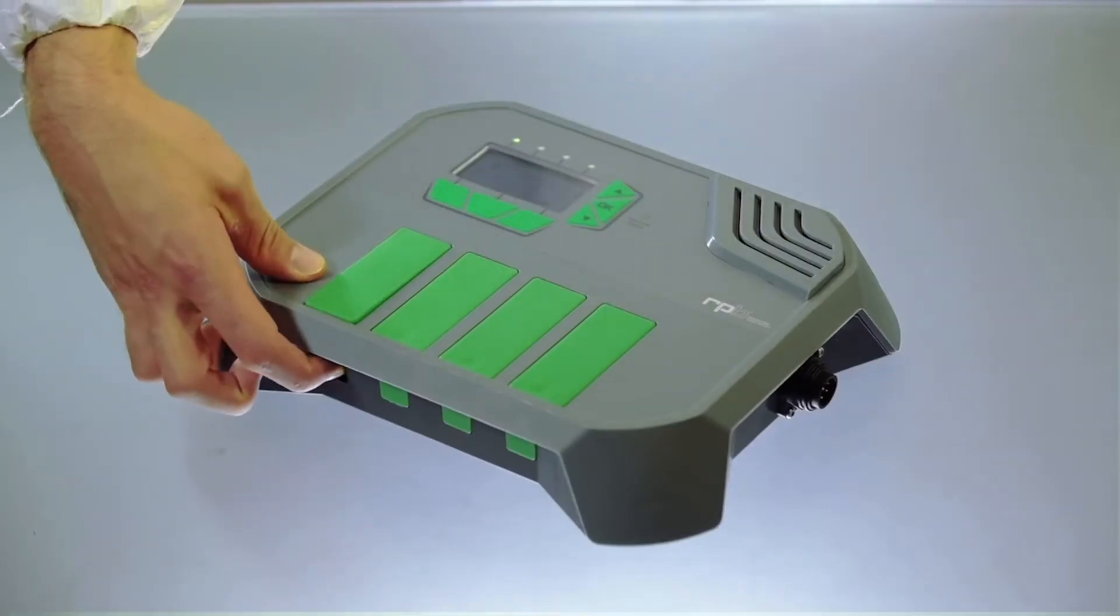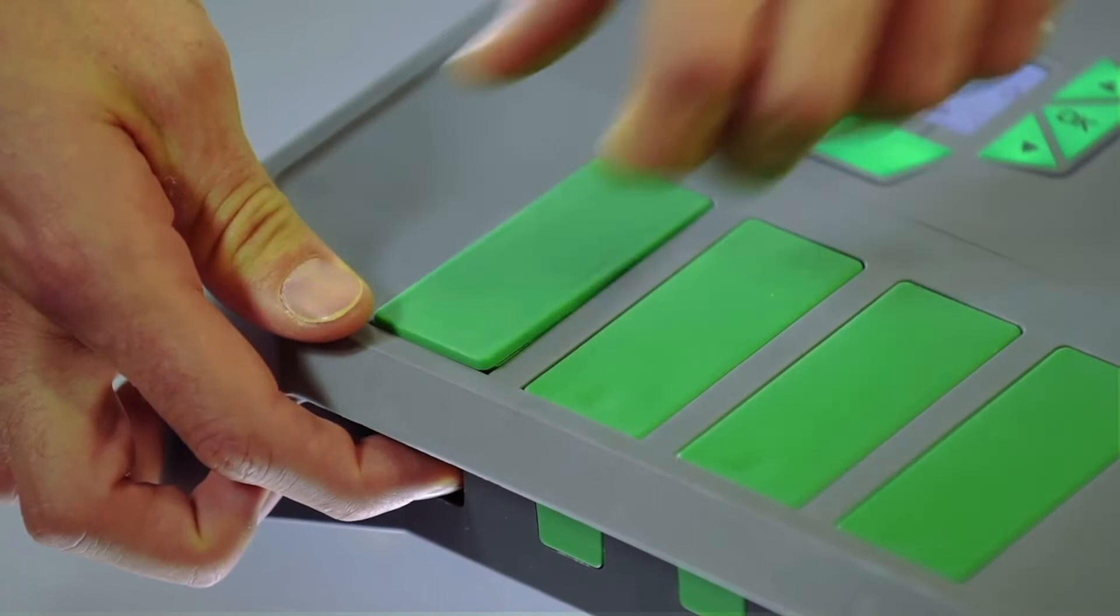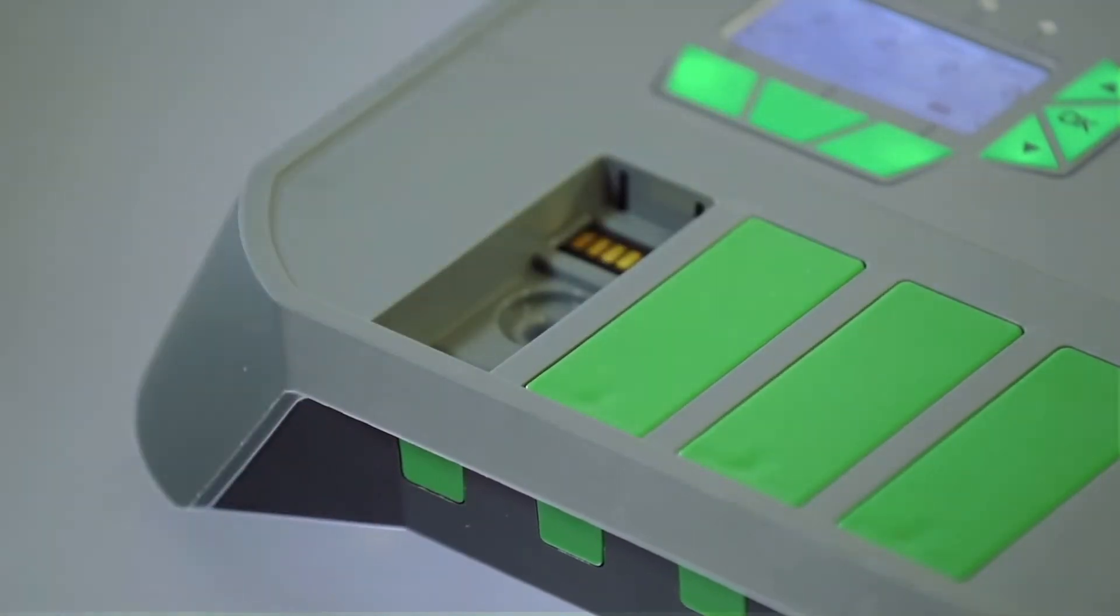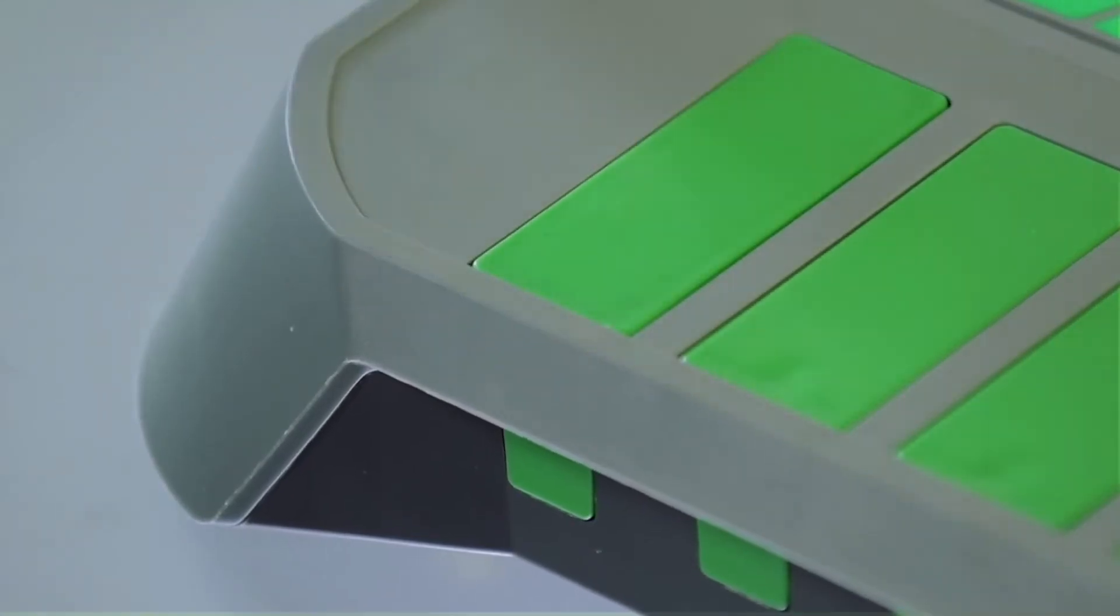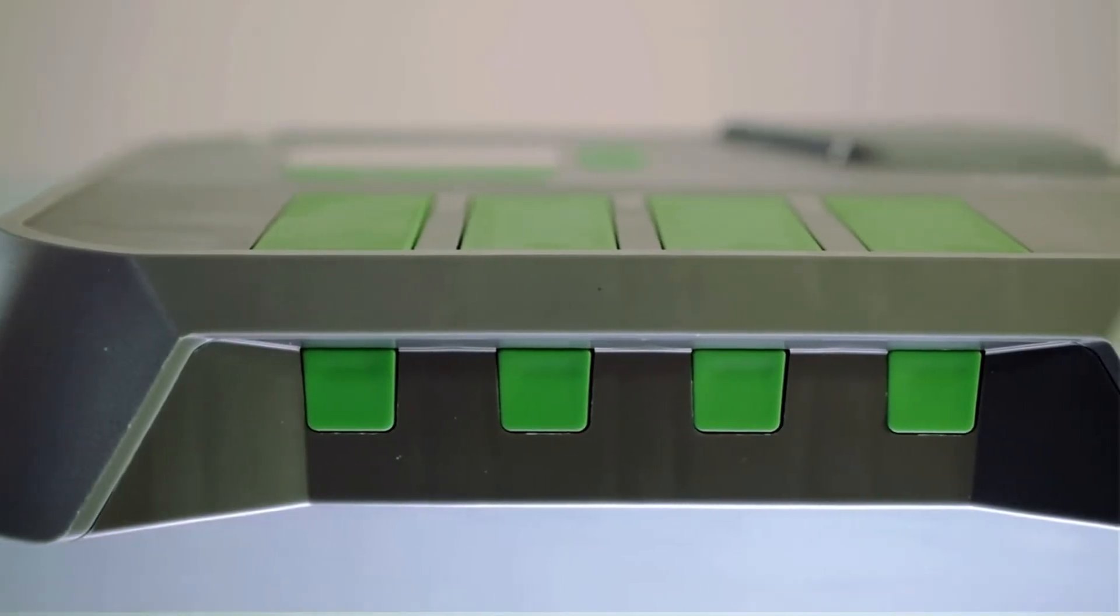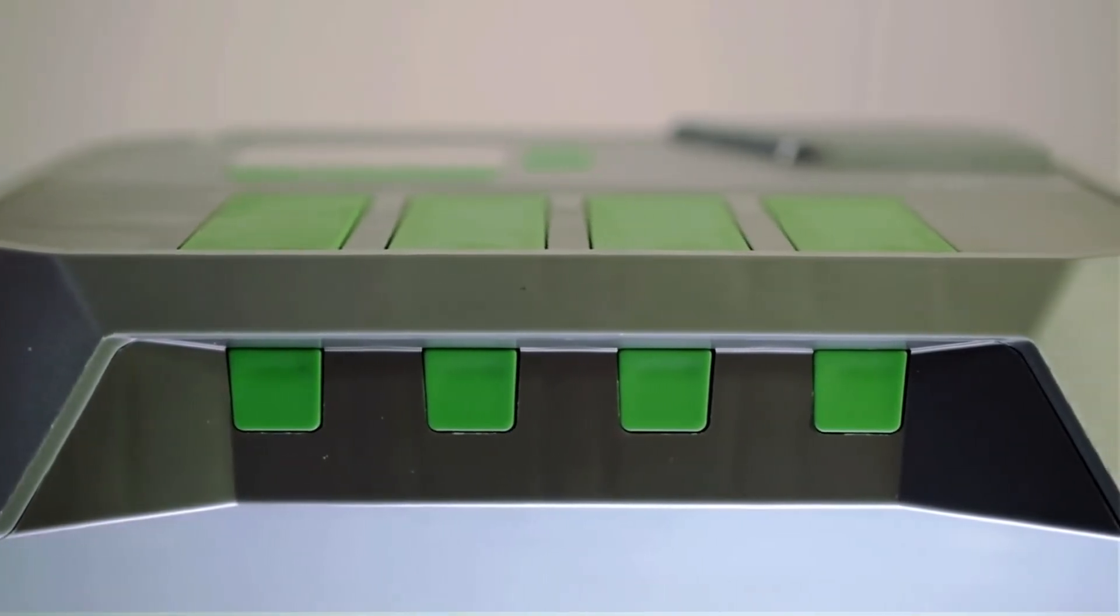To do this, simply push the sensor cartridge release button, remove the expired sensor cartridge from your unit, and replace it with a pre-calibrated sensor cartridge which is ready for use straight off the shelf.